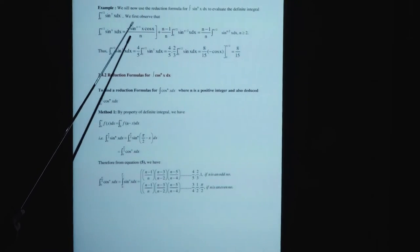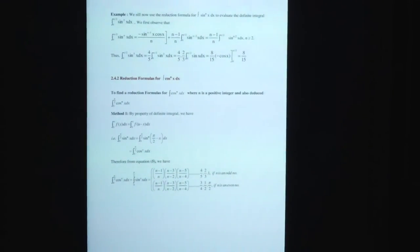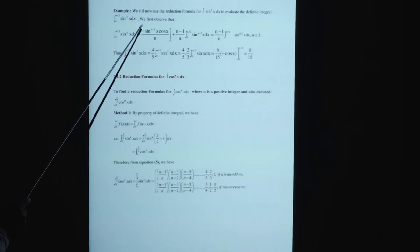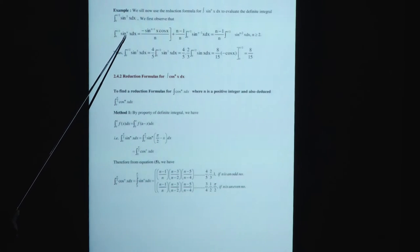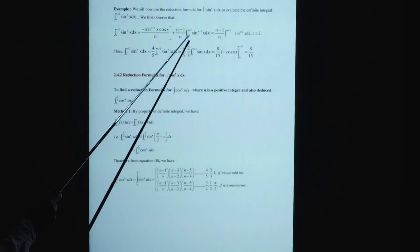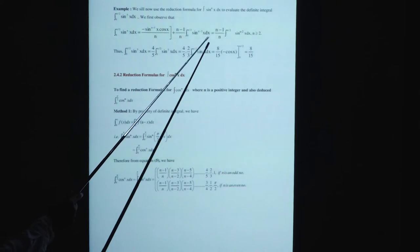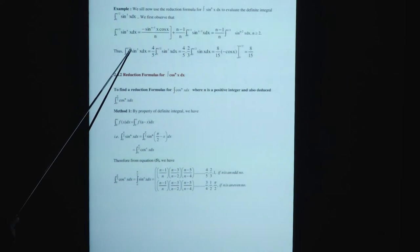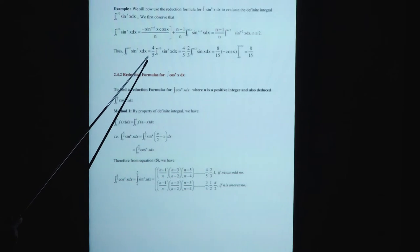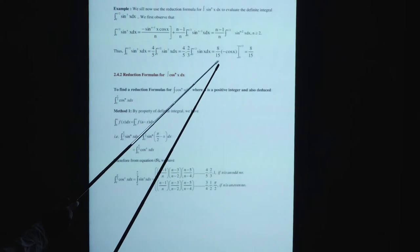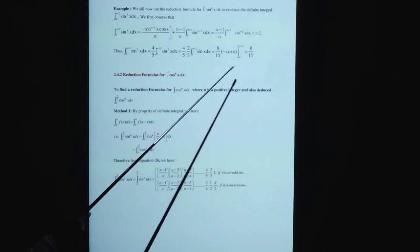Example: we shall now use the reduction formula for integration of sin^n(x) dx to evaluate the definite integral integration from 0 to π/2 of sin^5(x) dx. We observe that integration from 0 to π/2 of sin^n(x) dx = (n-1)/n times integration from 0 to π/2 of sin^(n-2)(x) dx, for n ≥ 2. Thus integration from 0 to π/2 of sin^5(x) dx = 4/5 times integration from 0 to π/2 of sin^3(x) dx = 4/5 times 2/3 times integration from 0 to π/2 of sin(x) dx = 8/15 times [-cos(x)] from 0 to π/2 = 8/15.